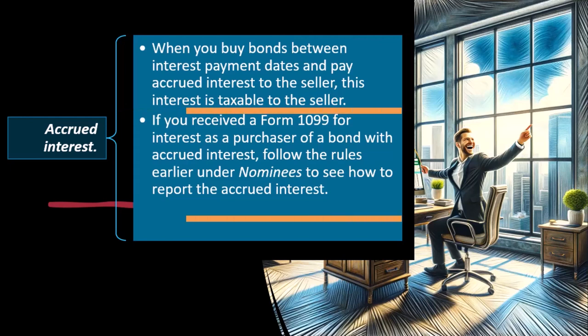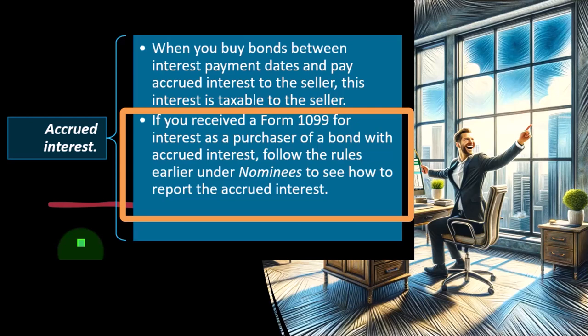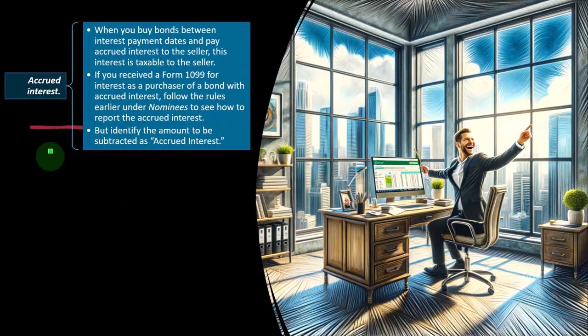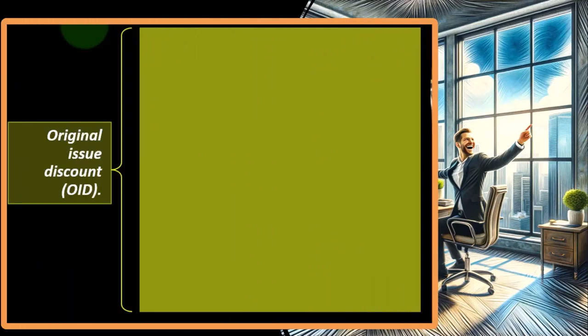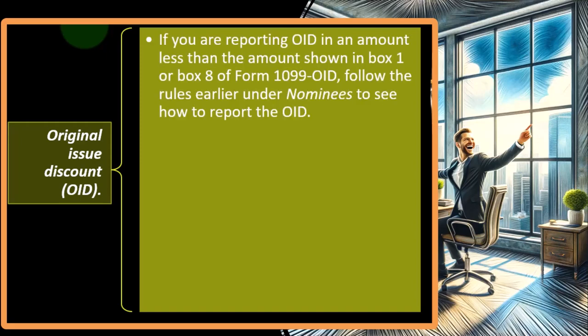If you receive a Form 1099 for interest as a purchaser of a bond with accrued interest, follow the rules under nominees to see how to report the accrued interest, but identify the amount to be subtracted as accrued interest. You may need to report the amount on the 1099 and then reduce it by the accrued interest amount, which means reporting the 1099 amount and subtracting it, giving the IRS the rationale as to why.